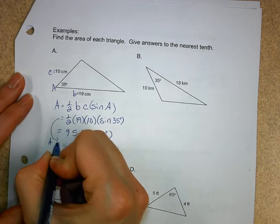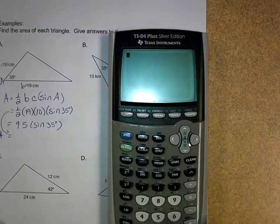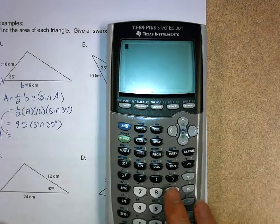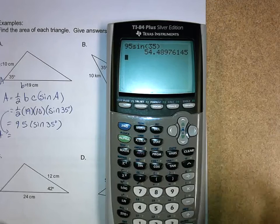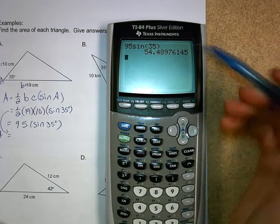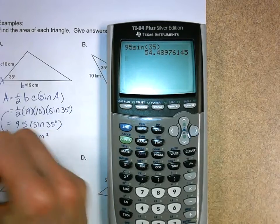You could go straight to the bottom step, and I want this to the nearest tenth, so let's punch it into our calculator. We're going to go 95 times the sine of 35,